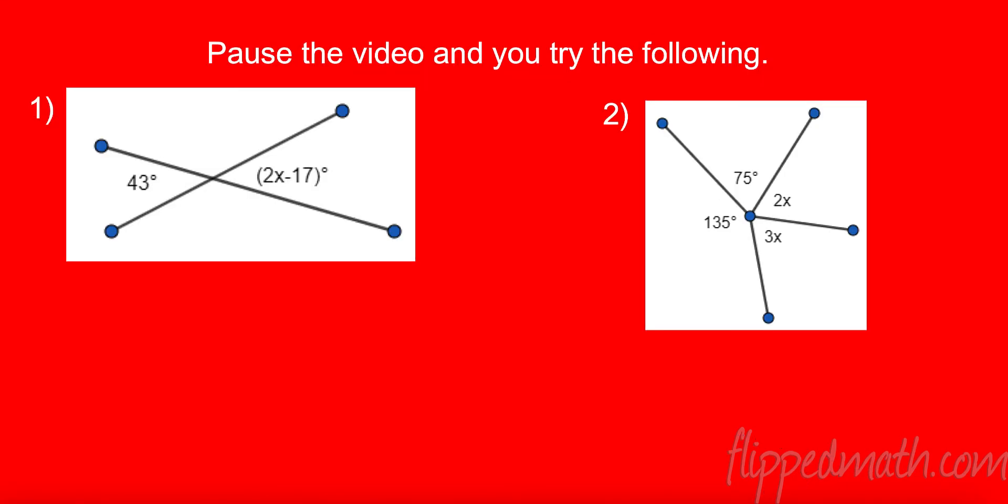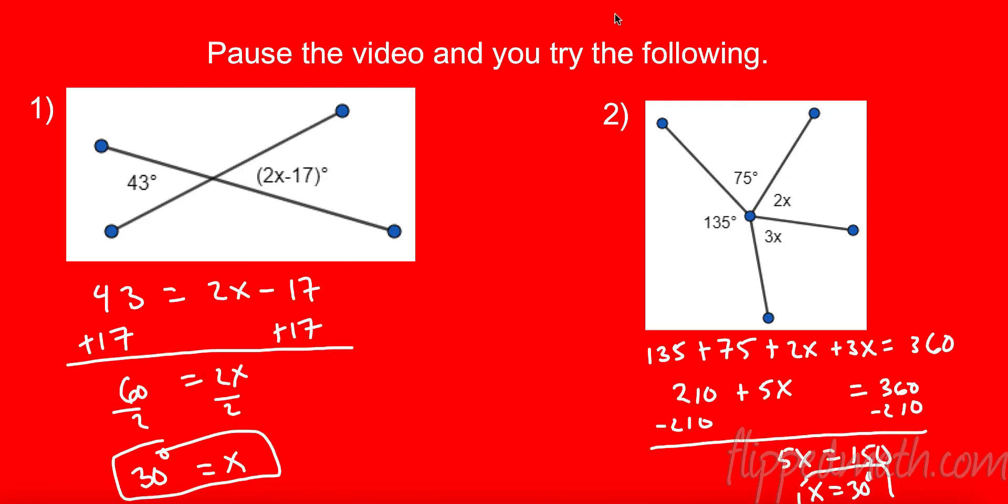I want you to pause the video and try these two problems on your own. Okay. The first one over here, 43 and 2x minus 17, they're vertical angles. They're opposite each other. So I set them equal to each other. So 43 equals 2x minus 17. Added 17. I got 60 equals 2x. Then I divided by 2, and I got 30.